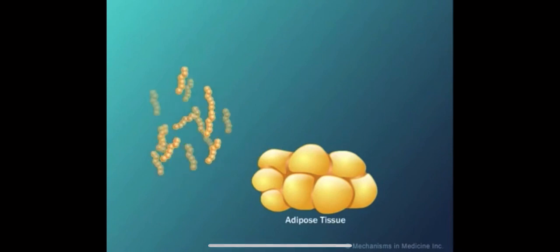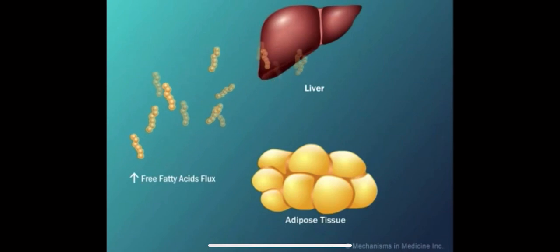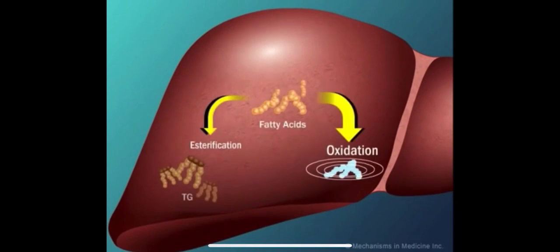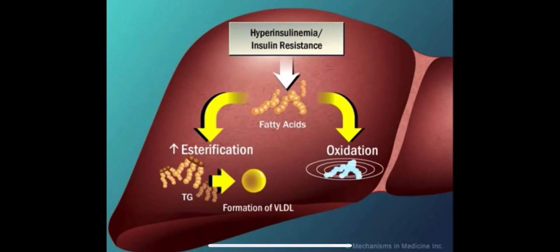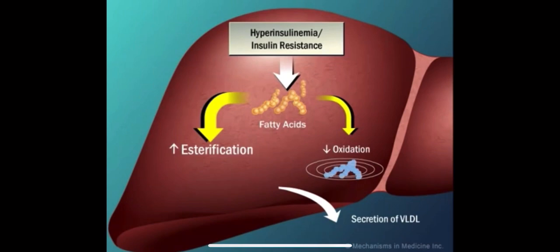Free fatty acids released from adipose tissue circulate in the blood towards the liver. The free fatty acids are taken up by the liver, where hepatocytes channel fatty acids into secretory pathways. In a state of hyperinsulinemia, there is increased synthesis of triglycerides and esterification, with consequent high rates of very low-density lipoprotein secretion into the bloodstream. At the same time, there is decreased oxidation of free fatty acids.